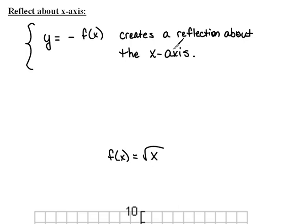If you think about it, this makes actually an awful lot of sense, because what we're doing here is we're taking the original x and making it negative for the new y-value. This all has to do with the symmetry and stuff that we've seen before.